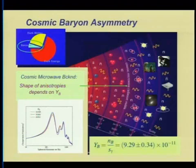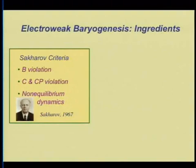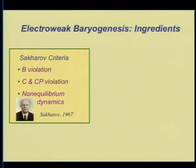From a fundamental physics point of view, where this number came from was laid out in general terms by Andrei Sakharov. Sakharov told us three ingredients had to be present: violation of baryon number — if you conserve it, you can never end up with more baryons than antibaryons; CP violation as well as charge conjugation symmetry violation; and at some point the universe's dynamics had to go out of equilibrium.